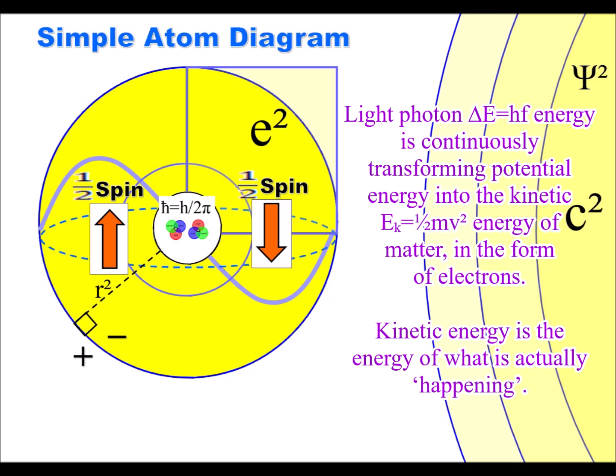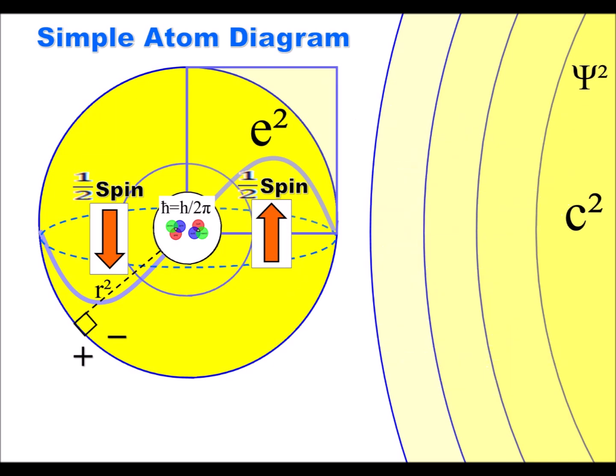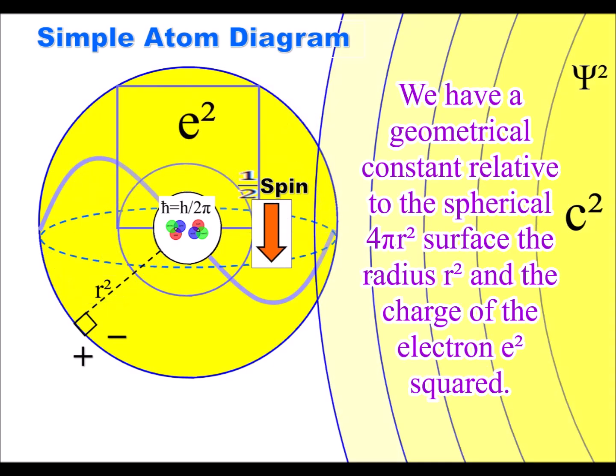The absorption forms a photon-electron coupling and at that moment in time the energy levels cannot drop below the center of the sphere because the process is relative to the radius and the spherical surface.